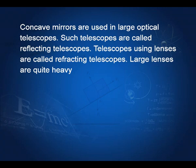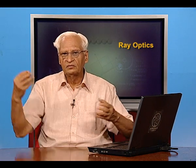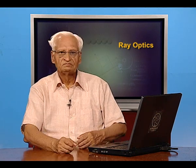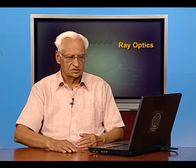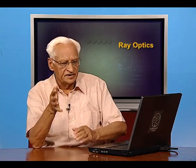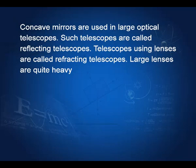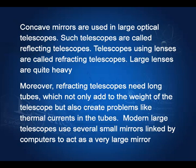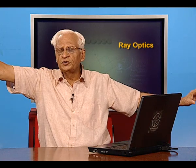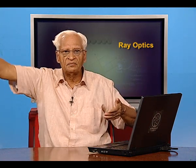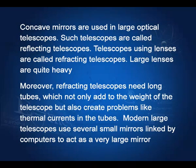Concave mirrors are used in large optical telescopes, as well as in shaving kits, makeup kits, and by dentists to examine teeth. In large telescopes today, lenses are not used because large lenses are quite heavy, whereas mirrors are very thin and not heavy. Moreover, refracting telescopes need long tubes, which add to the telescope's weight and create problems like thermal currents — a long tube can develop temperature gradients leading to thermal convection.